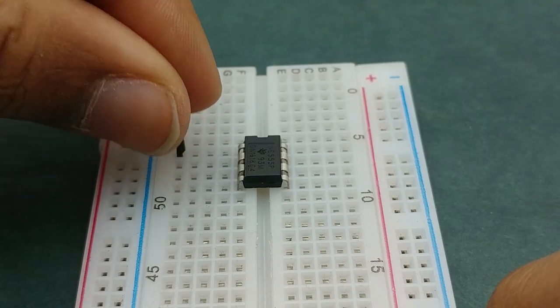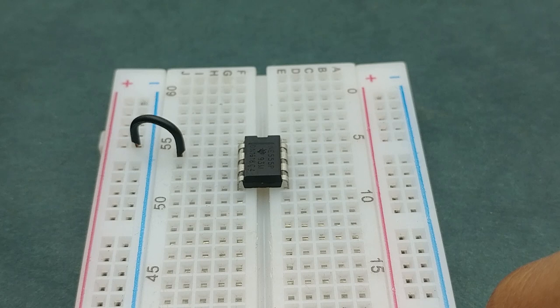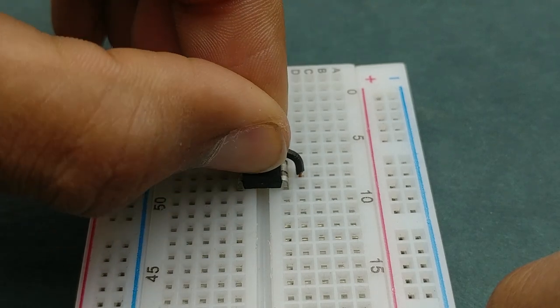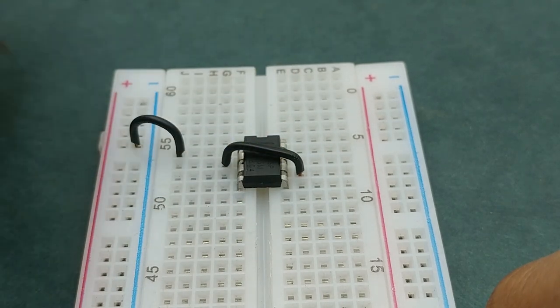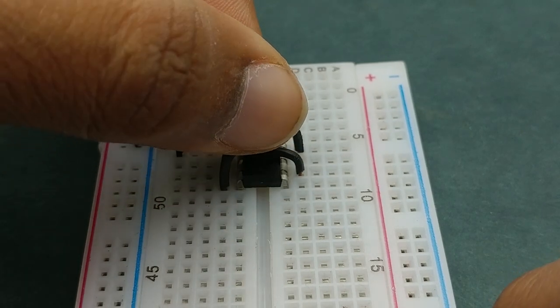Next connect pin 1 of the IC to negative rail, now connect pins 2 and 6 of the IC to each other and similarly connect pins 4 and 8 of the IC to each other.